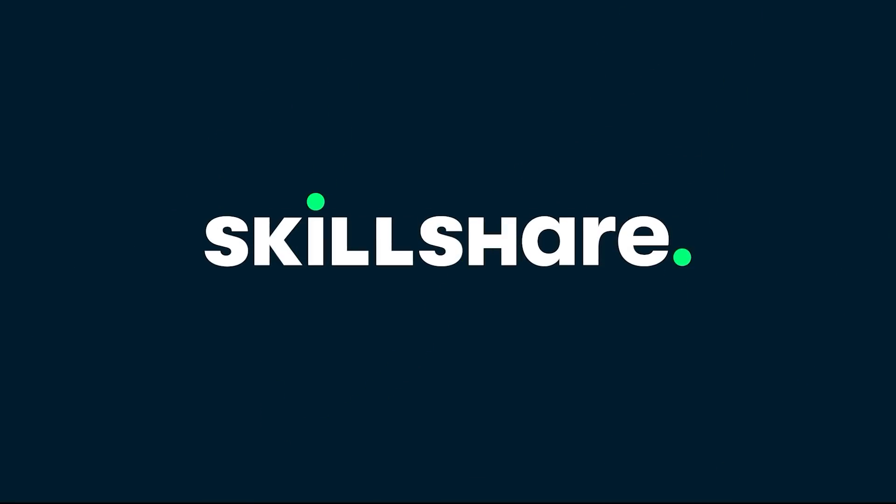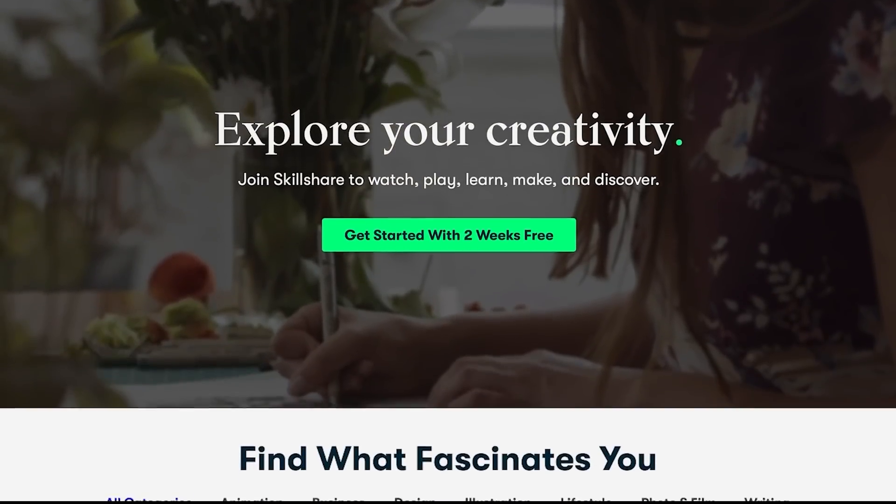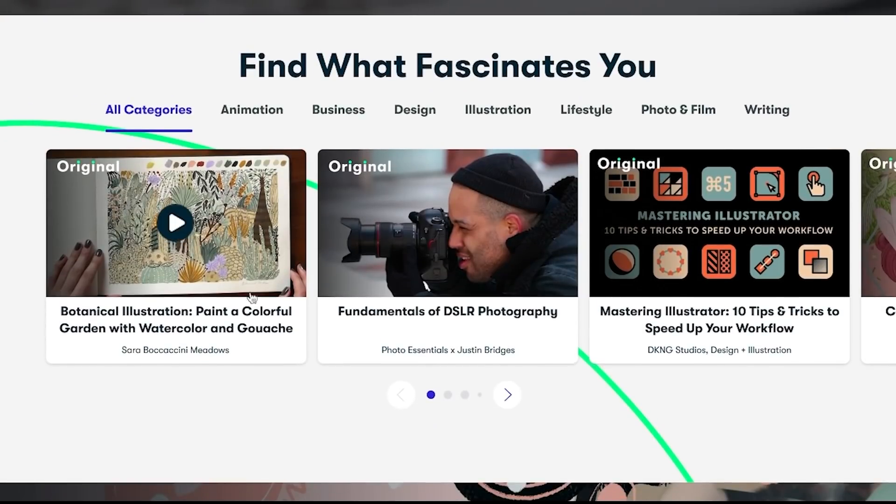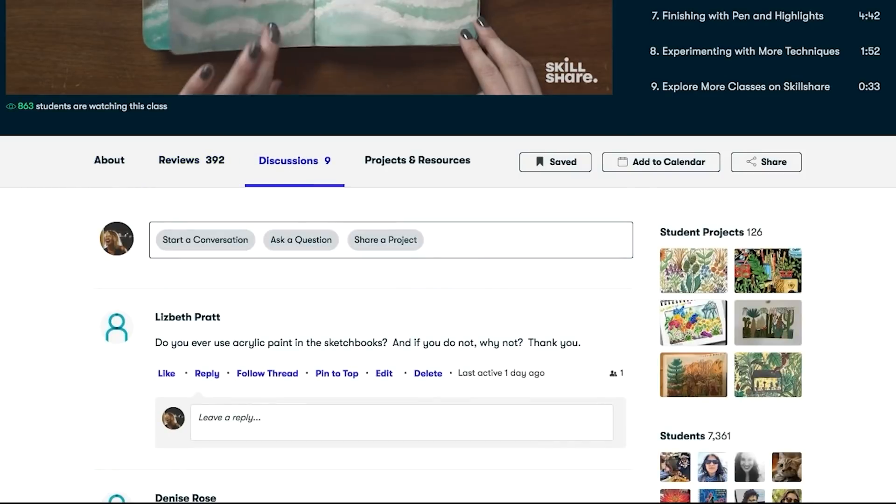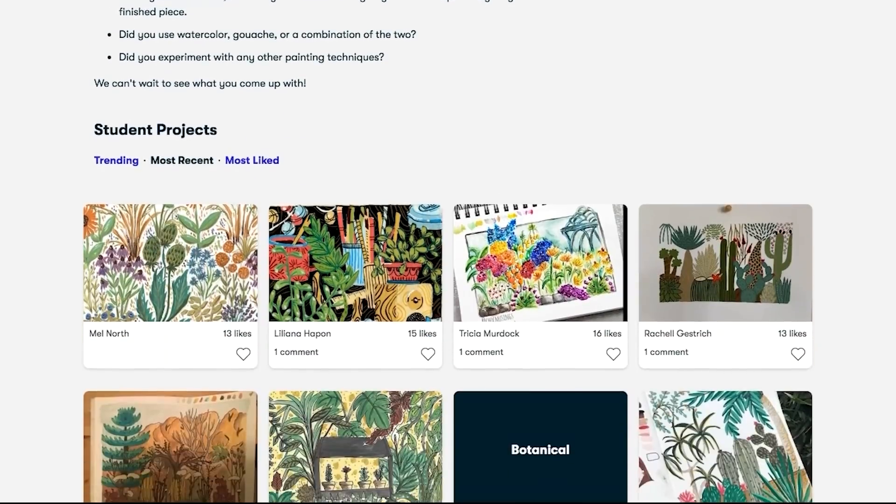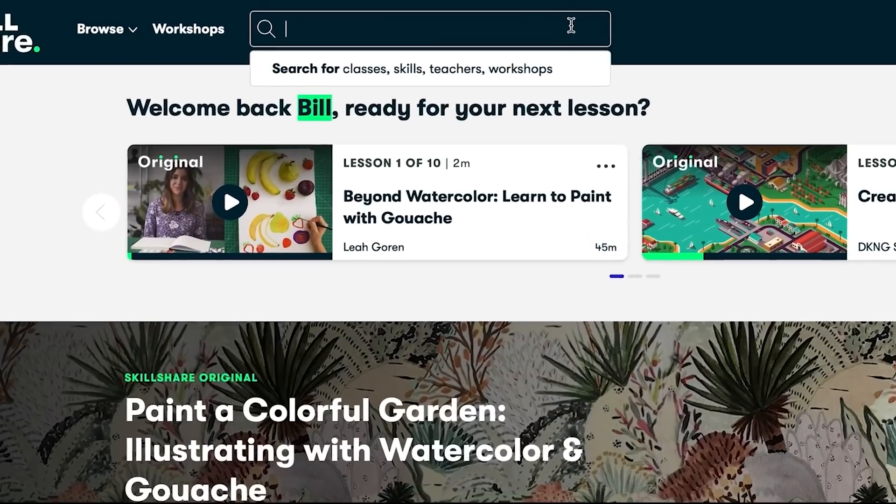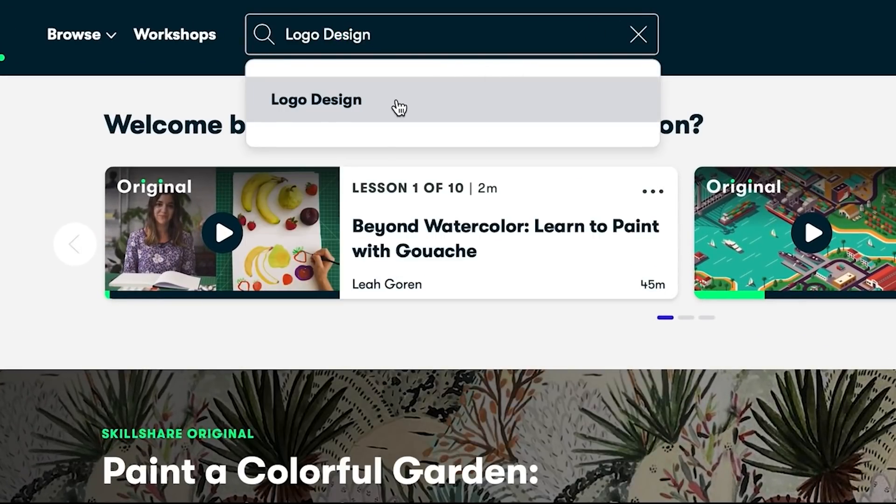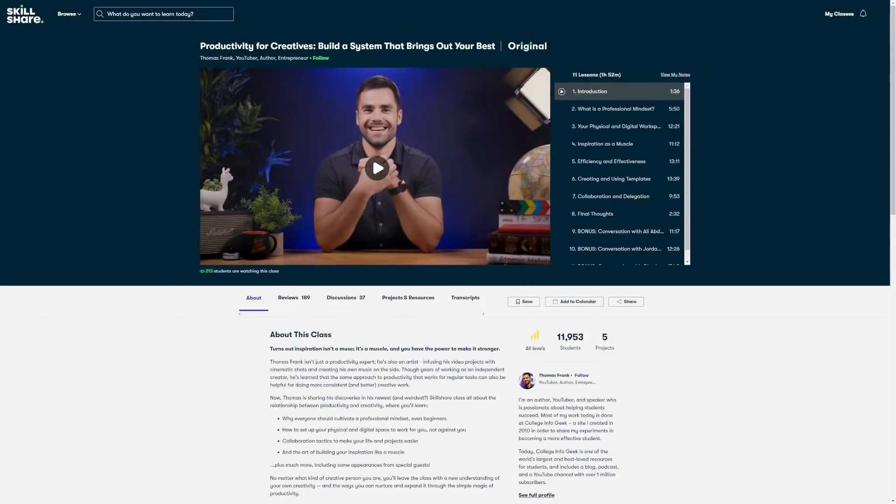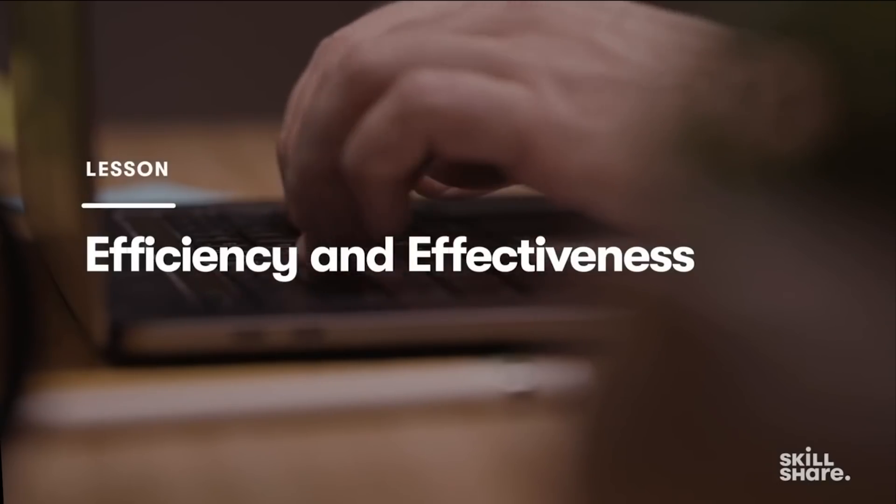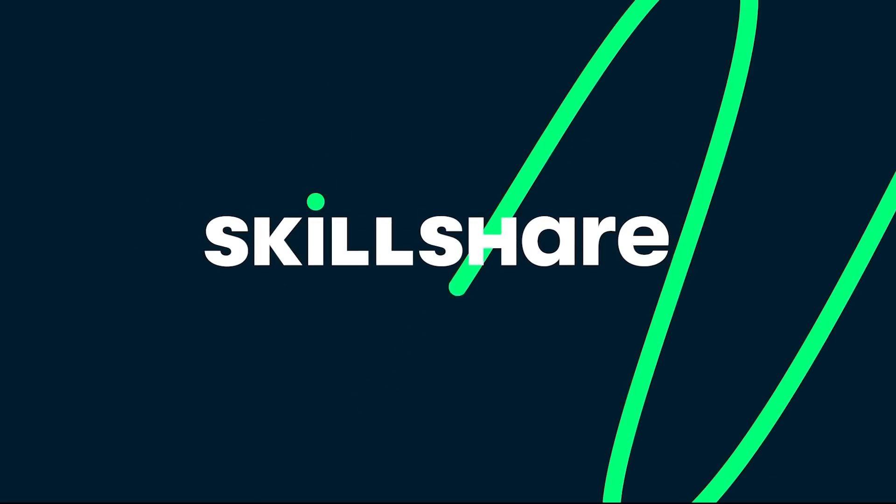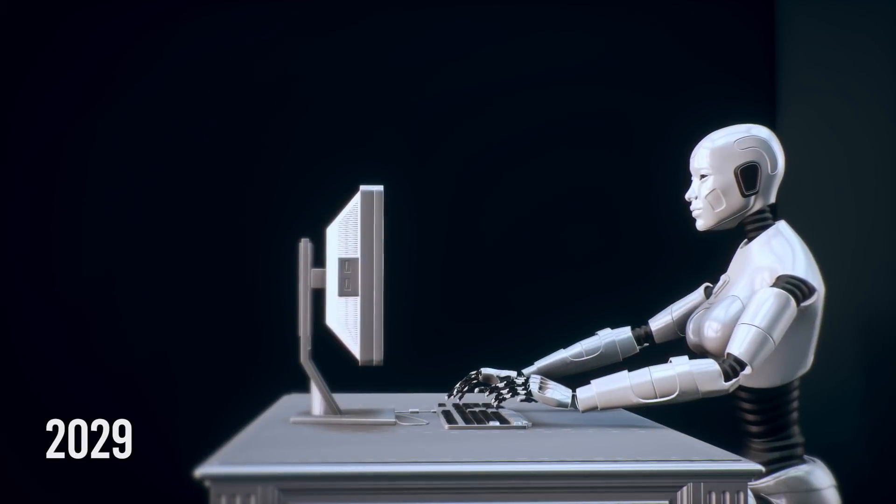This video is sponsored by Skillshare, an online learning community with thousands of classes covering creative skills like film, video, photography, and fine art. Premium membership gives unlimited access to all classes. The first thousand subscribers to click the link in the description will get a one-month free trial. By 2029, computers will reach human-level intelligence.